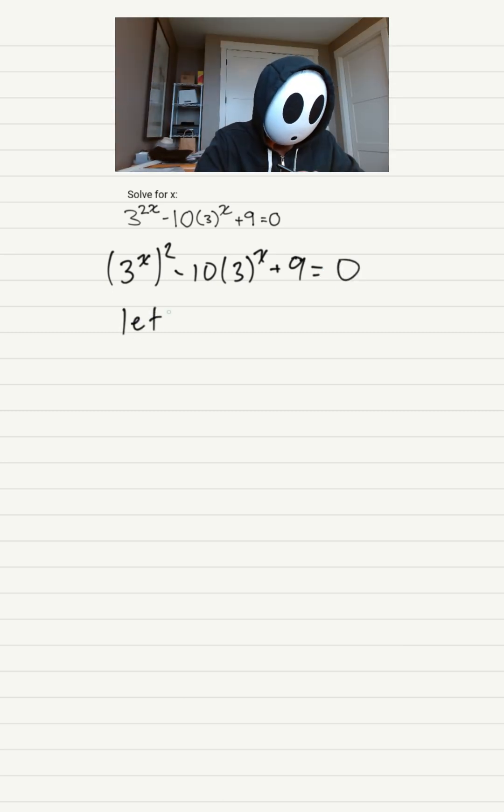Now, let 3 to the power of x equals t, and later I'll show you why. So we'll be left with t squared minus 10t plus 9 equals 0.